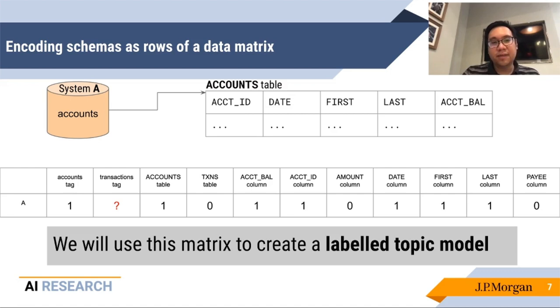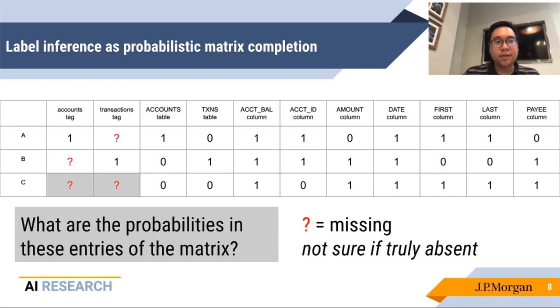And here the word labeled refers to the fact that we have these semantic tags, the accounts and transactions that tell us something about the semantic information, not just the physical information about where the data is laid out, but also that the fact that a human has gone through and labeled this particular database as being about accounts and another one about transactions. If you repeat the process for all three systems, this is the matrix that you get.